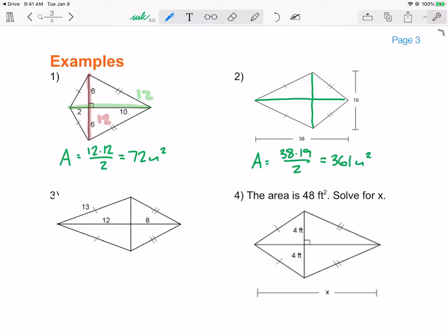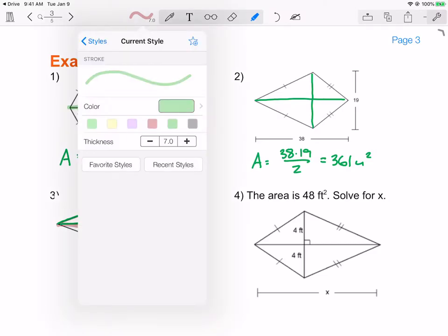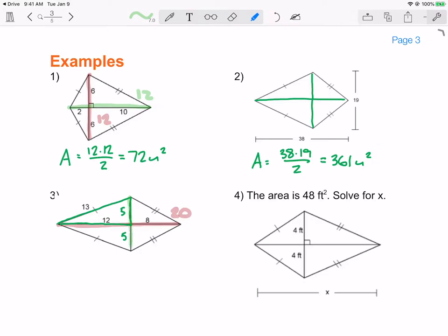This one, I've got another right triangle problem using either Pythagorean theorem or triples. Well, I remember my triples, so I know this is a 5, 12, 13, which means the other triangle on the bottom is a 5, 12, 13, which means that the length of this diagonal here is 12 plus 8 is 20, and the length of my other diagonal is 5 plus 5 is 10. So then the area of my kite is simply 10 times 20 divided by 2, which is 100 units squared.